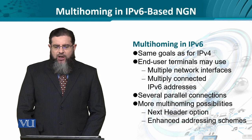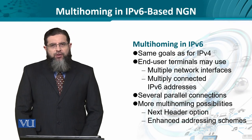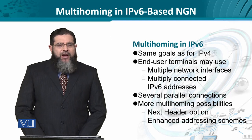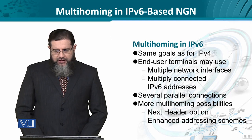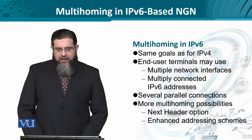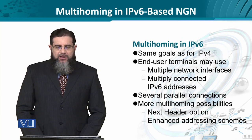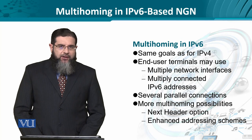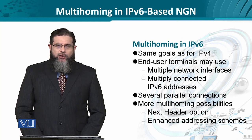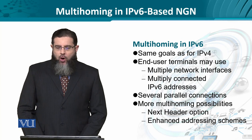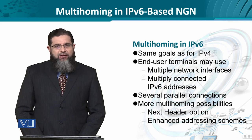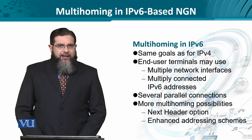In IP version 6, the goals are essentially the same — to have failover, better throughput, reliability, etc. But here we have added features. We have multiple network interfaces and multiply connected IPv6 addresses. By multiply connected, one IP address could be mapped to a single interface or more than one interface. Similarly, one interface could be mapped onto one IPv6 address or multiple IPv6 addresses. This means massive parallel connectivity is possible.